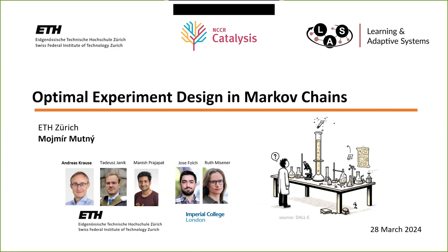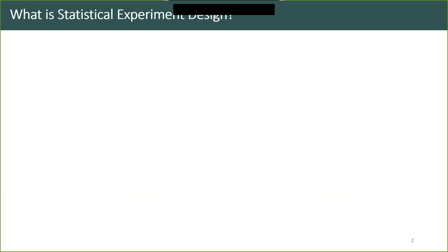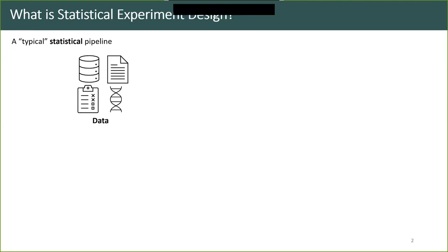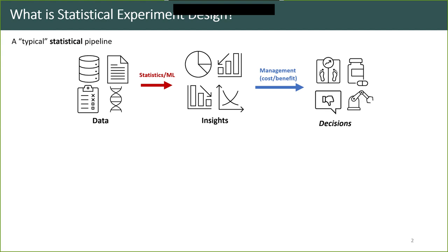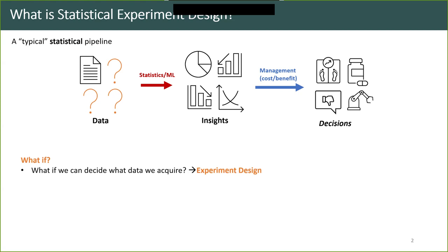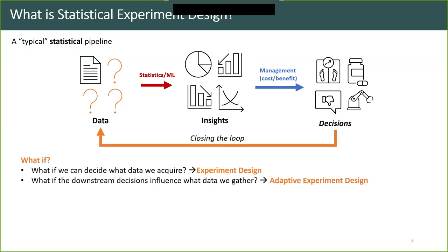Let's start with the topic of today. First, I want to introduce what is statistical experimental design. Consider the typical statistical pipeline: we have data, we perform analysis using statistics and machine learning, and get insights. Management does cost-benefit analysis, takes these insights, and makes decisions. Now suppose we don't have all the data and we can decide what data we need in order to perform these decisions correctly — this is known as experiment design.